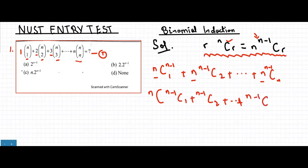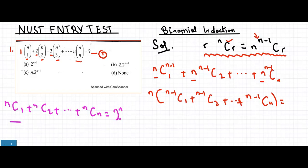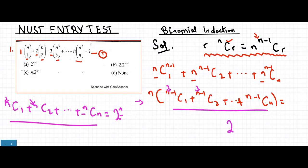We know that nC1 plus nC2 plus so on till nCn equals 2 to the n. The difference between our expression and this is that we have (n-1) instead of n. So when we had n we got 2 to the n, meaning our inner sum equals 2 to the (n-1). Combined with the n factored out, we get n·2^(n-1).